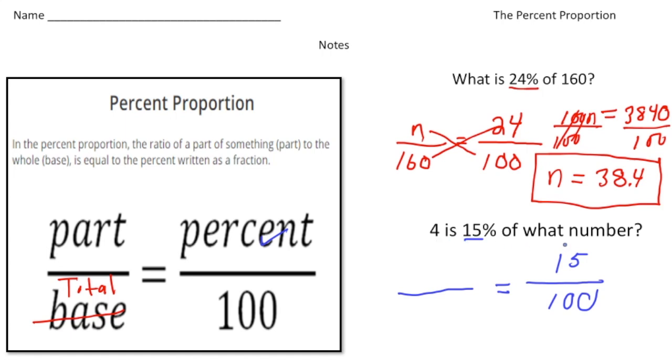So the 4 is going to go where the part is, and we want to know what the total is. So that's going to be the unknown, like this. Now we can cross multiply. So 15 times n is 15n, and that's going to equal 4 times 100, which is 400. And now I divide both sides by 15 and solve for n.